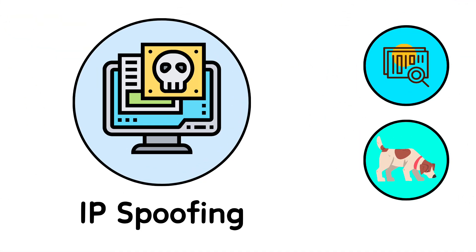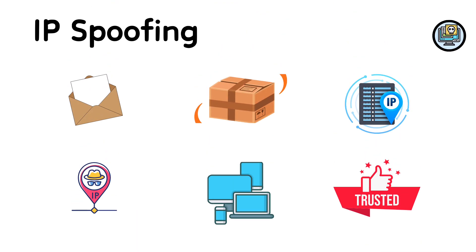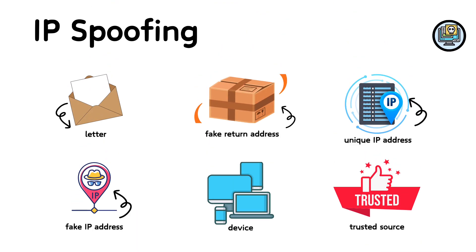6. IP Spoofing. IP spoofing is like sending a letter with a fake return address. In computer networks, every device has a unique IP address. When a hacker uses IP spoofing, they send messages with a fake IP address, pretending to be another device. This can trick computers into thinking the messages are coming from a trusted source.